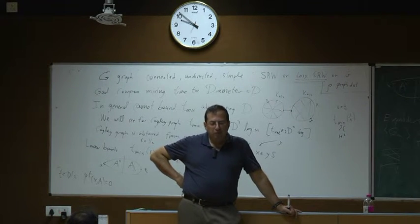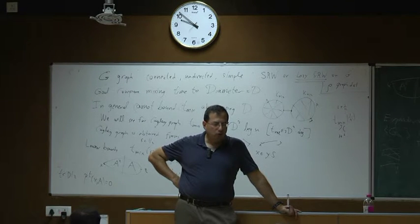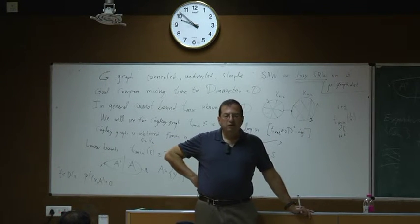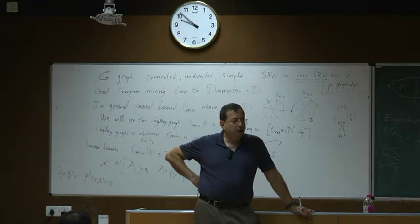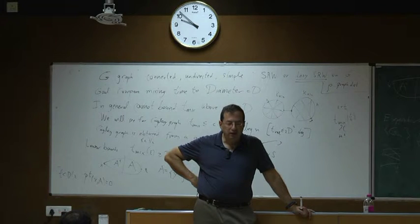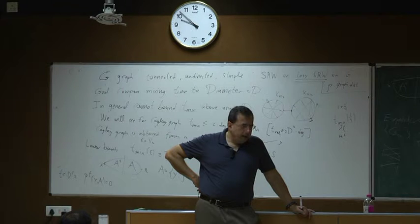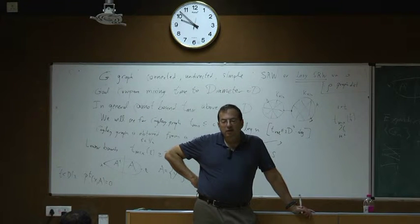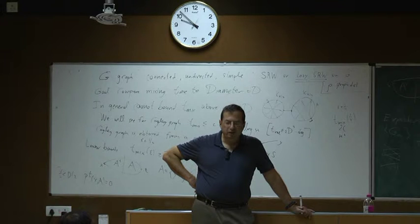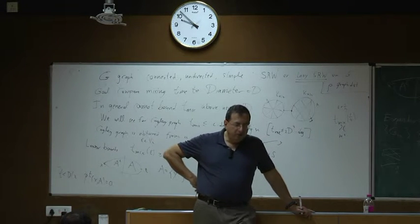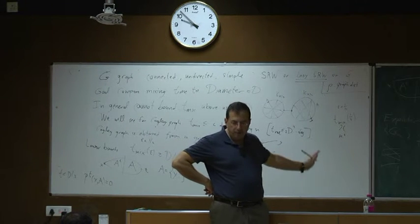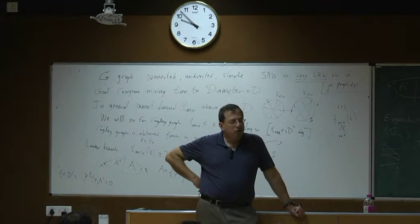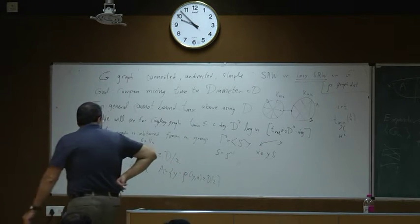These Ramanujan graphs have relaxation time of order 1, so the mixing time is of order log N. They also have diameter of order log N — any graph of bounded degree cannot have diameter smaller than order log N. So both the diameter and mixing time are order log N, showing this trivial bound can be sharp up to a constant. But in many cases it is not satisfactory, so let's see a better bound.